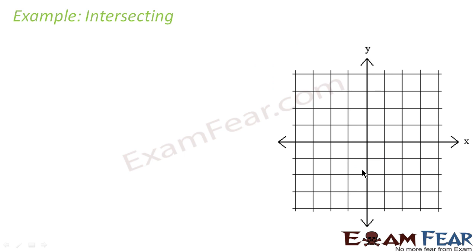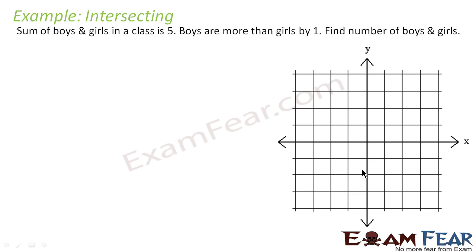Now let us take an example of intersecting lines using the same problem: sum of boys and girls in the class is 5, and boys are more than girls by 1 — find the number of boys and girls. Let boys be x and girls be y. Since sum of boys and girls is 5, we can say x plus y is equal to 5. And boys are 1 more than girls means x minus y is equal to 1.